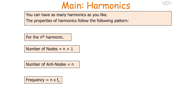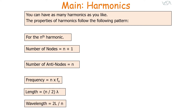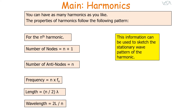The frequency of the nth harmonic is n times the frequency of the first harmonic, the length is equal to n divided by two times the wavelength, and therefore the wavelength is equal to two times the length of the string over n. This information can be used to sketch the stationary wave pattern of any harmonic.